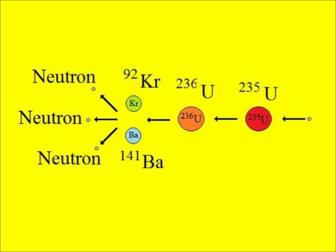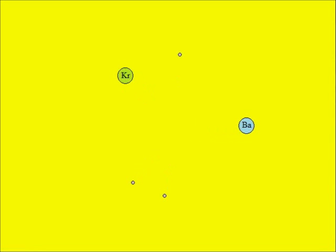This uranium-236 atom is so energetic that it quickly splits into a krypton atom and a barium atom, along with three neutrons, which can go on to cause other fission events. This animation is an illustration of nuclear fission reactions.